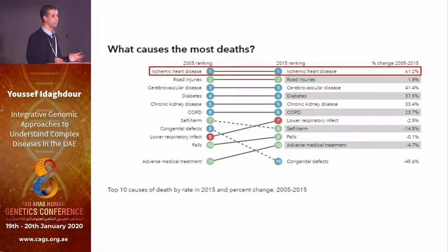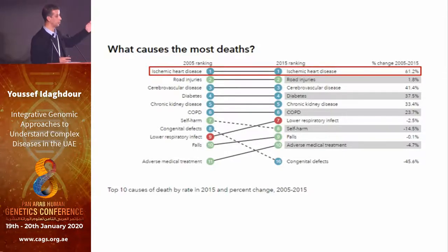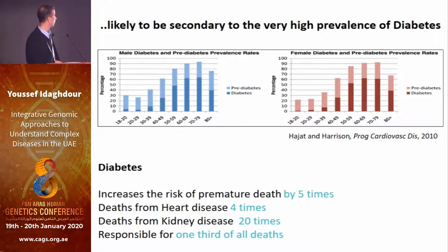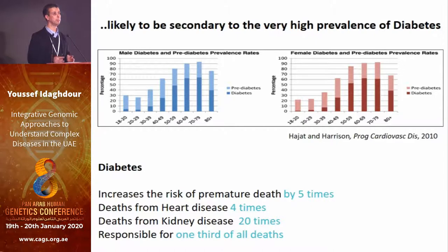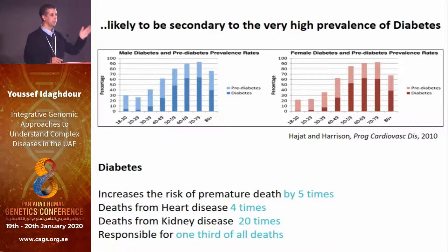If you look at the reasons, ischemic heart disease is the number one cause. It's diabetes and cardiometabolic disease that are driving this trend — literally the number one public health priority for the UAE. If you look at diabetes and prediabetes, the prevalence of diabetes is about 50% at the age of 50 in the UAE national population. That's very high.